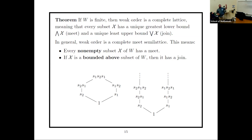If all I wanted was to embed this complete meet semi-lattice into a complete lattice, I could just add one element on top — taking a complete meet semi-lattice and throwing one element on top always gives a complete lattice. But this is not what I want to do. I want something much more specific.